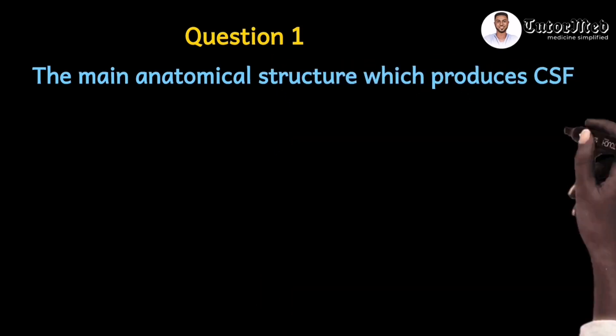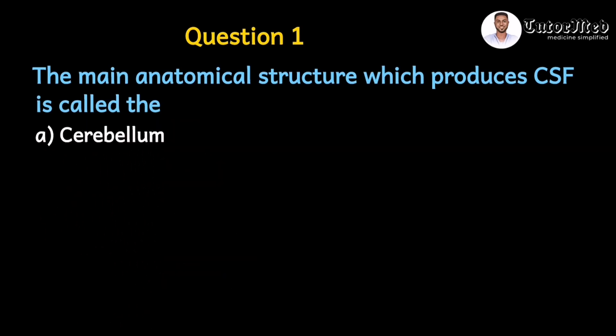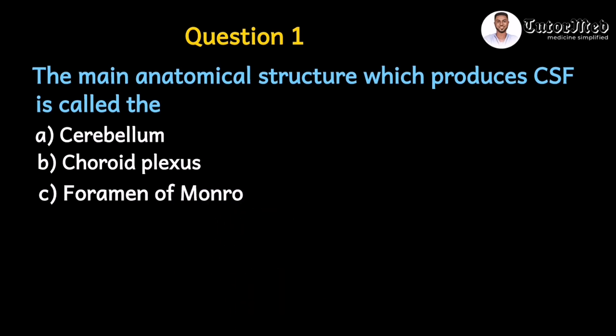Question one says: the main anatomical structure which produces CSF is called — A: cerebellum, B: choroid plexus, C: foramen of Monroe, D: cerebrum, and E: amygdala. Let's take some seconds to think through this question and guess the answer. If you are thinking the answer is option B, choroid plexus, then you are right.